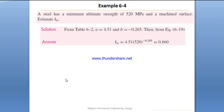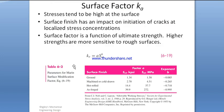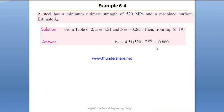For example, consider a steel with a minimum ultimate strength of 520 MPa and a machined surface. Looking up the table, the machined surface gives A equal to 4.51 and B equal to minus 0.265, resulting in a Ka value of approximately 0.8.